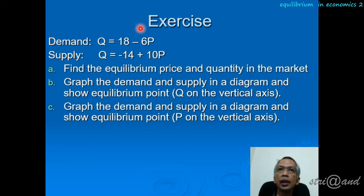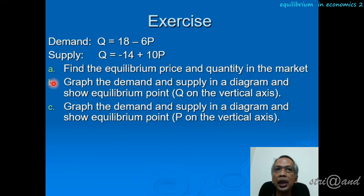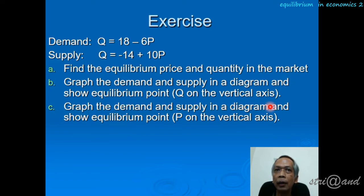We have a simple exercise about partial equilibrium with one commodity. Given the demand equation and the supply equation, part A asks to find the equilibrium price and quantity. Part B asks to graph the demand and supply in one diagram with quantity on the vertical axis and price on the horizontal axis, showing the equilibrium point. Part C asks for the same diagram but with price on the vertical axis and quantity on the horizontal axis.